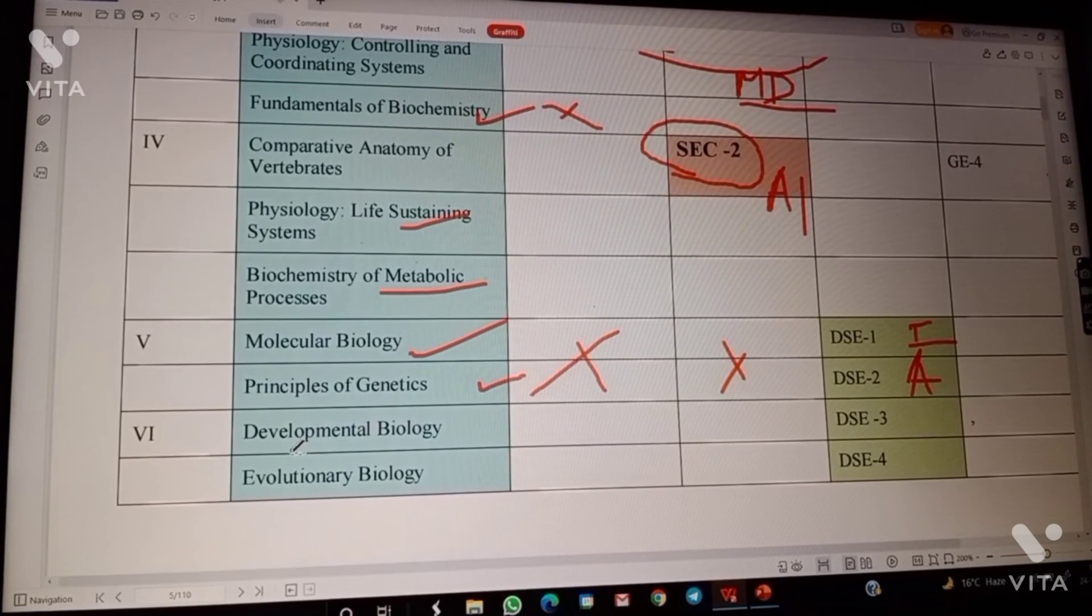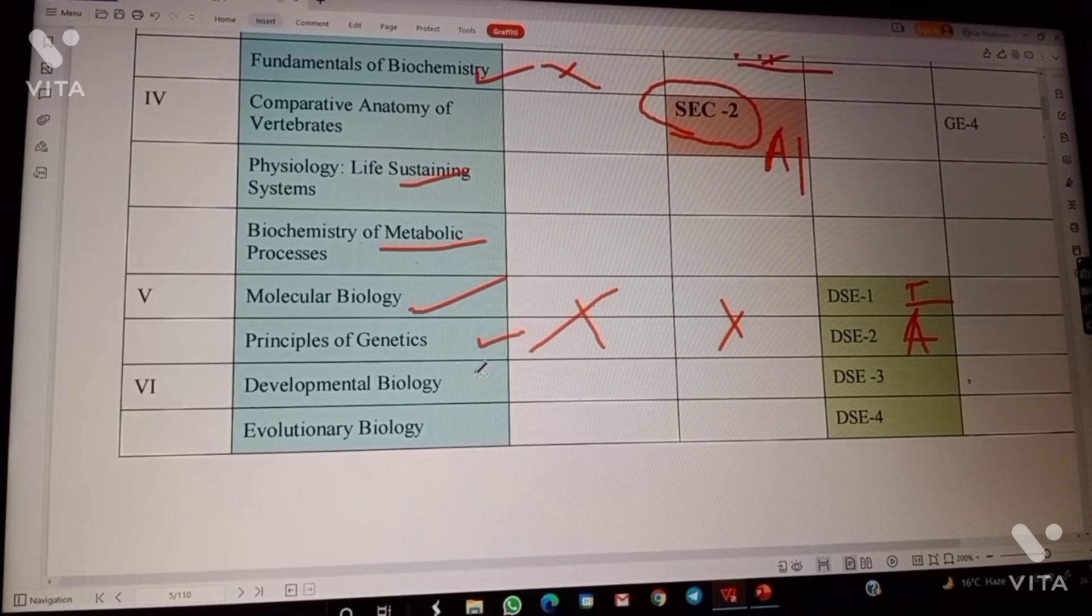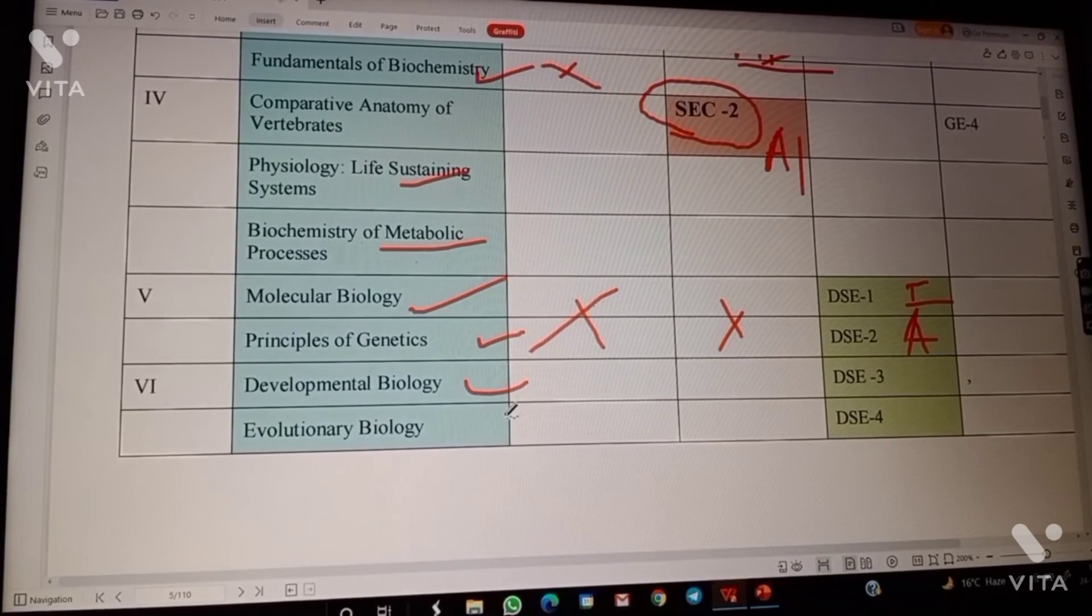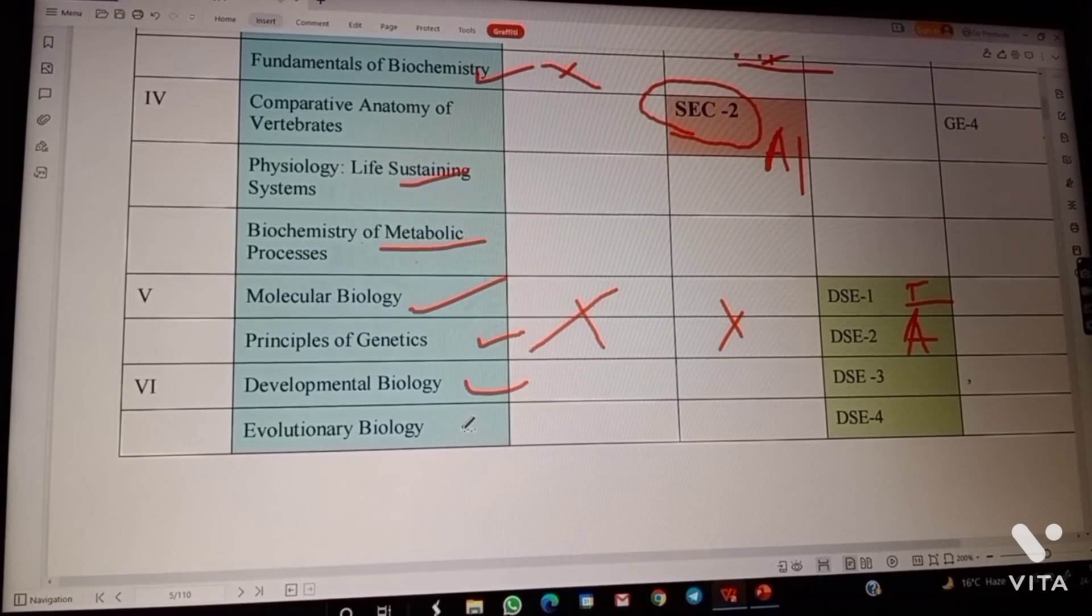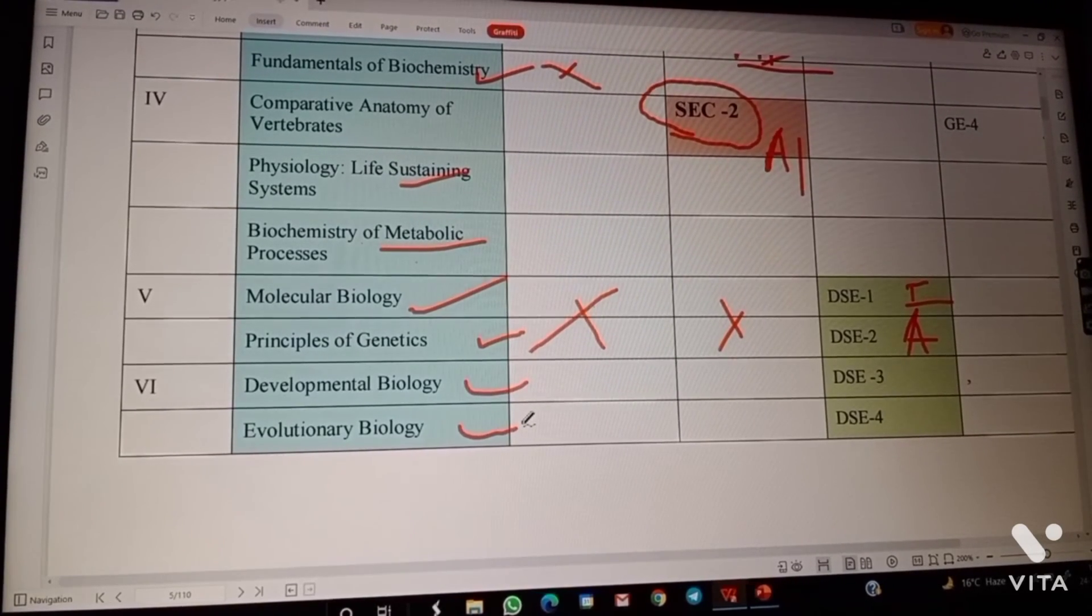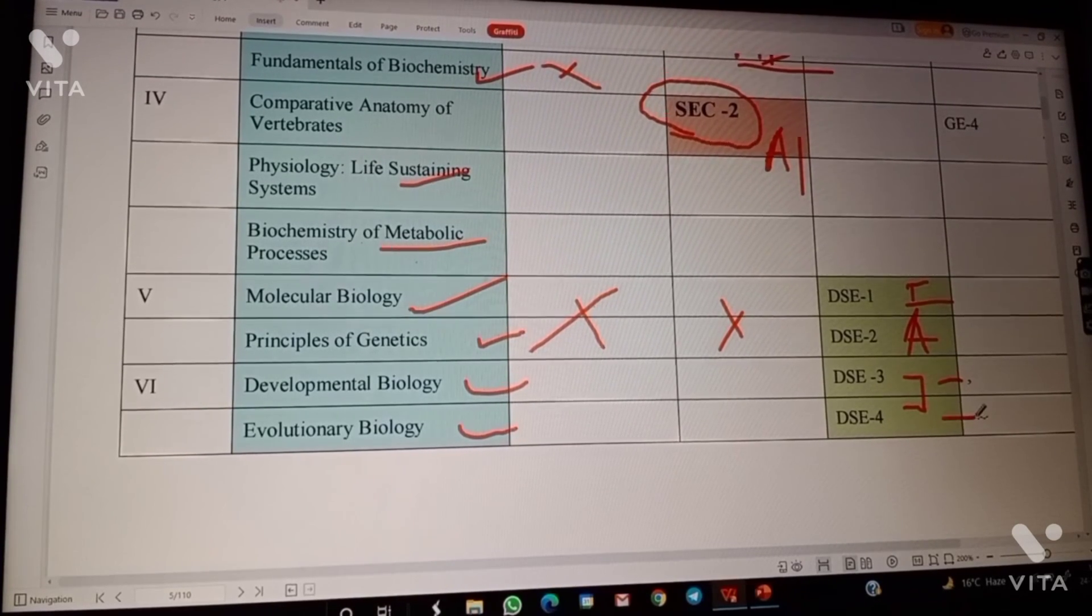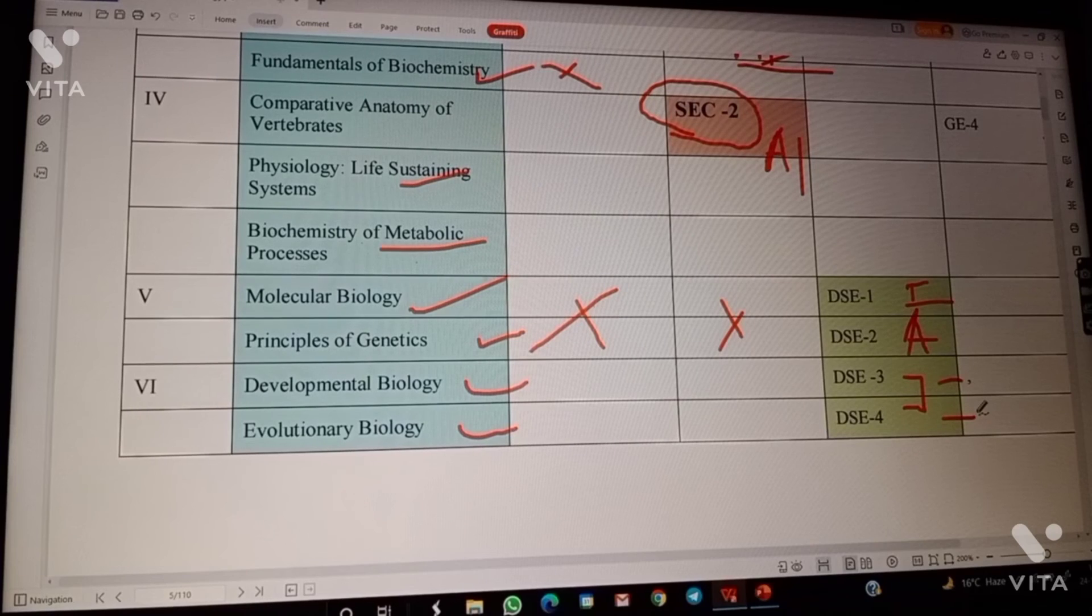And last semester, sixth semester, we have developmental biology, which we will study embryonic biology. Evolutionary biology is the core subject, is one of my favorite subjects, but let's see. As I am in fifth semester, so I cannot say anything about these two subjects. And in DSE 2, we have reproductive biology, and we have another subject that I am not sure, so I am not telling about which subject it is going to be.